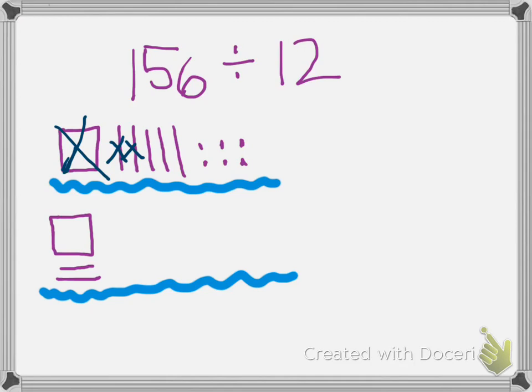And step number three, I want to make more groups of my divisor with the leftovers. So what do I mean by the leftovers? Well, in my second step, I used the hundreds block and two of the tens, and so what I have left over from my dividend up top is one, two, three tens and one, two, three, four, five, six ones.